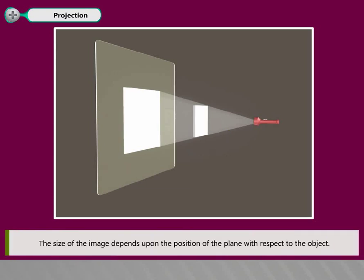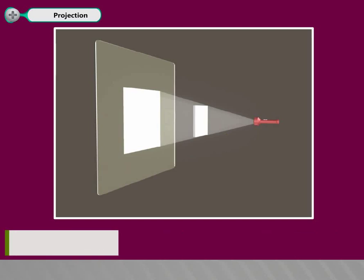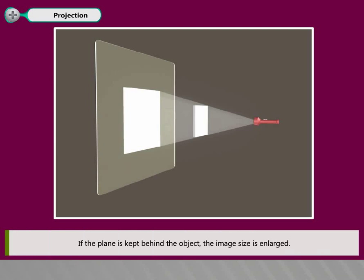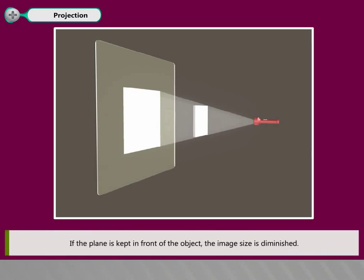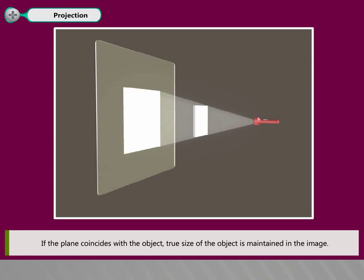The size of the image depends upon the position of the plane with respect to the object. If the plane is kept behind the object, the image size is enlarged. If the plane is kept in front of the object, the image size is diminished. If the plane coincides with the object, the true size of the object is maintained in the image.